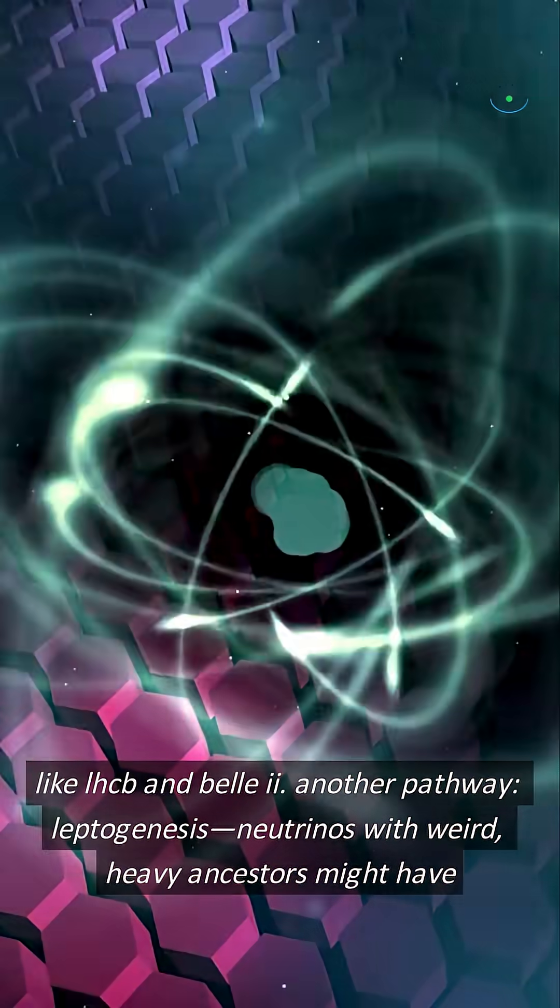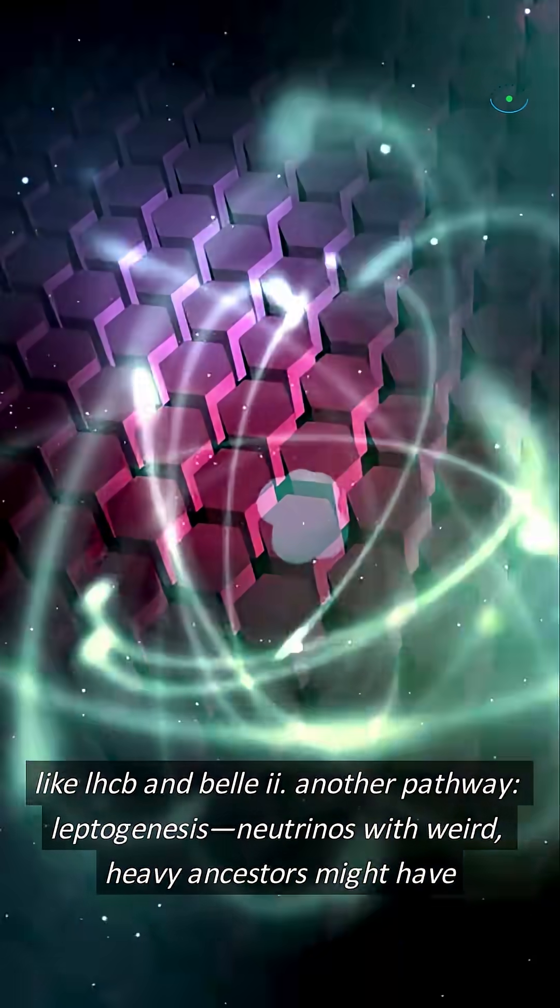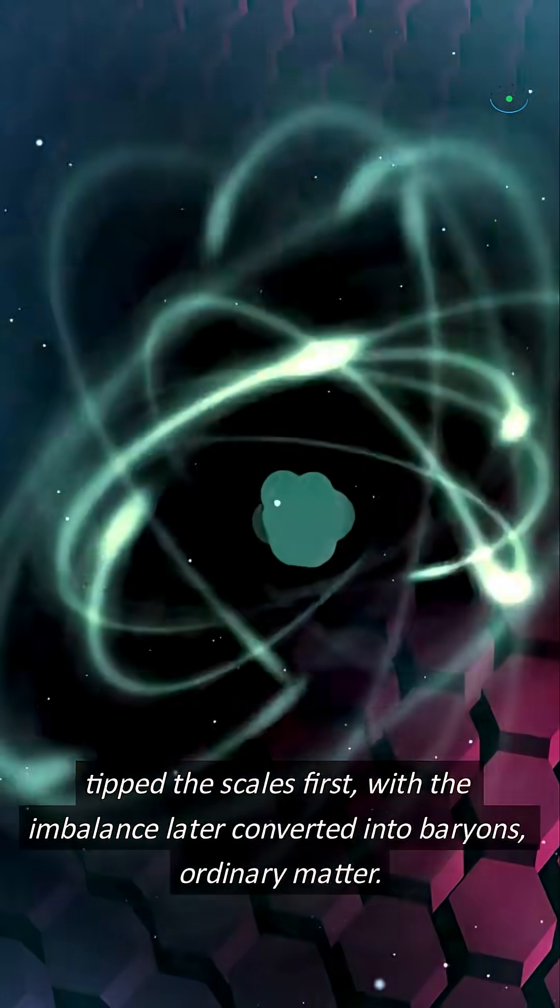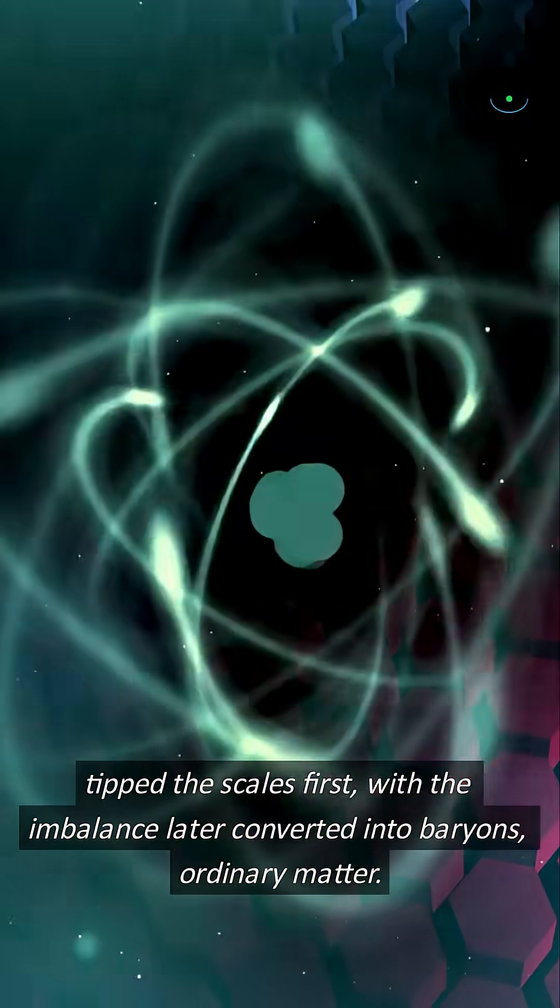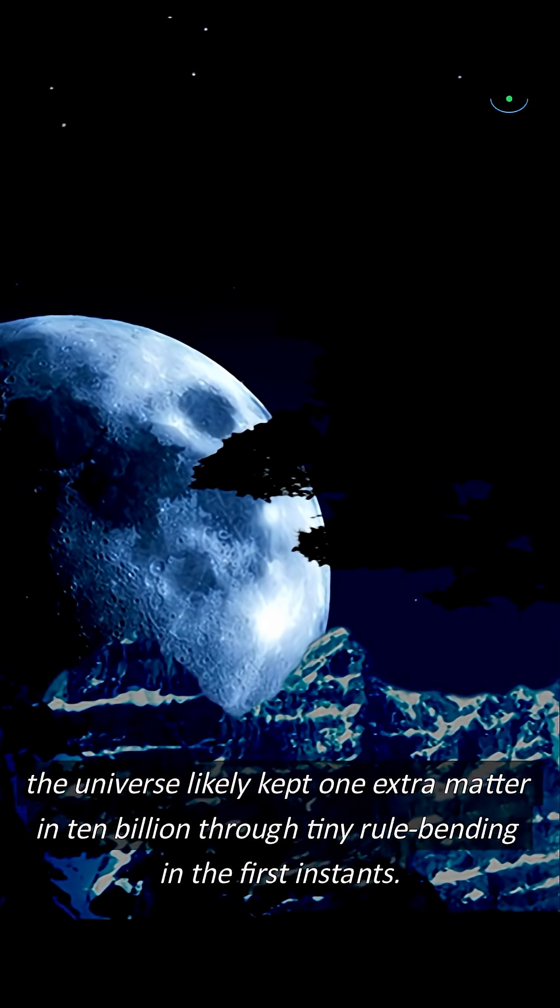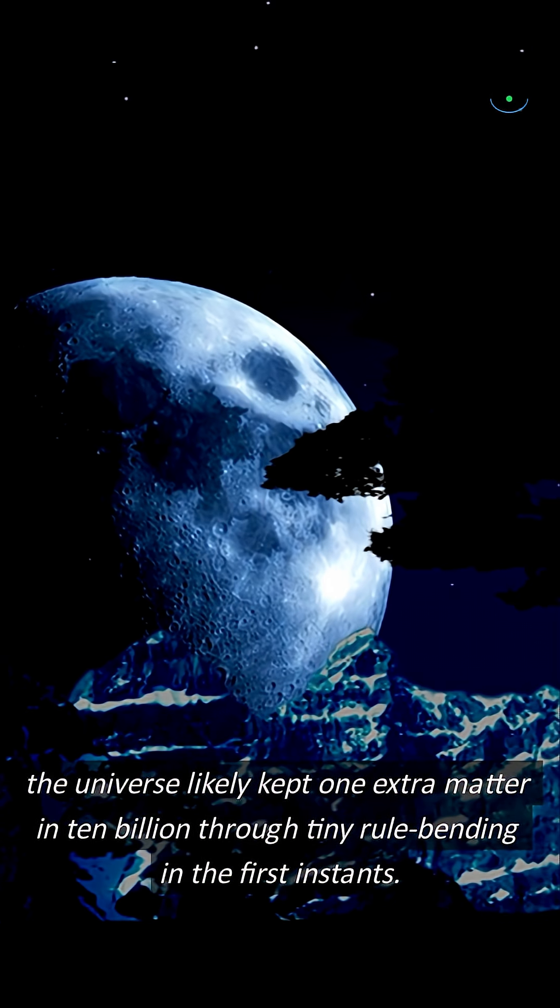Another pathway. Leptogenesis. Neutrinos with weird, heavy ancestors might have tipped the scales first, with the imbalance later converted into baryons, ordinary matter. The universe likely kept one extra matter in 10 billion through tiny rule-bending in the first instance.